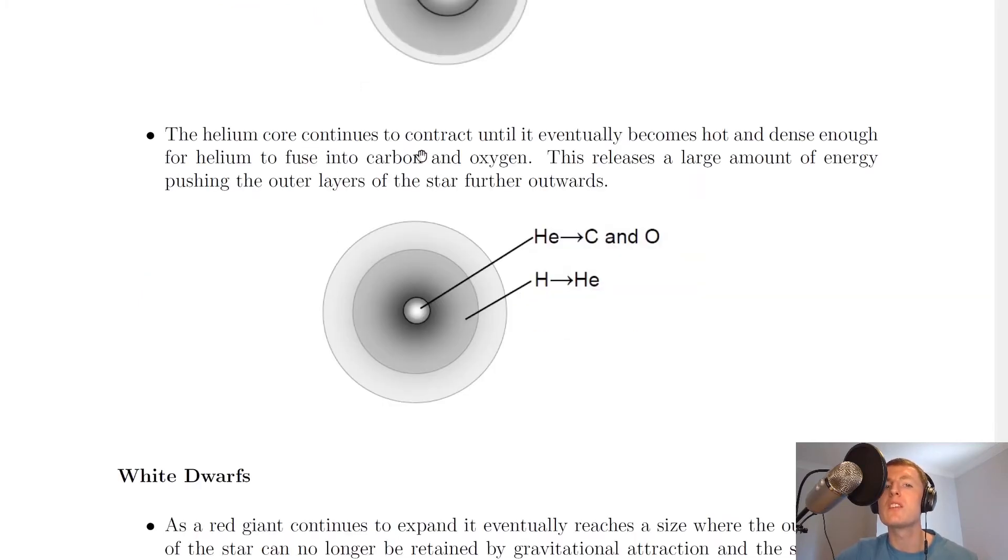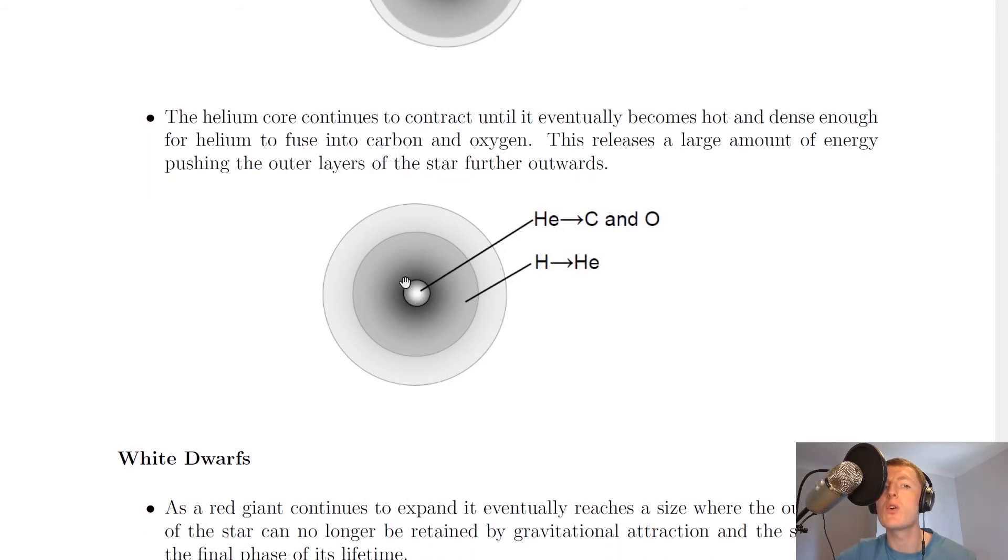The helium core continues to contract until it eventually becomes hot and dense enough for helium to fuse into carbon and oxygen, the heavier elements. This releases a large amount of energy, pushing the outer layers of the star further outwards. So there's our dense core there where helium is being converted into elements like carbon and oxygen and on the outer core we have our hydrogen being converted into helium.